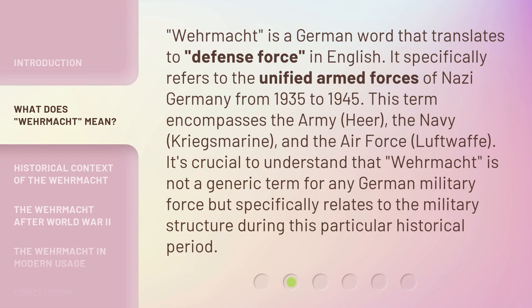Wehrmacht is a German word that translates to 'defense force' in English. It specifically refers to the Unified Armed Forces of Nazi Germany from 1935 to 1945. This term encompasses the Army, the Navy (Kriegsmarine), and the Air Force (Luftwaffe). It's crucial to understand that Wehrmacht is not a generic term for any German military force, but specifically relates to the military structure during this particular historical period.